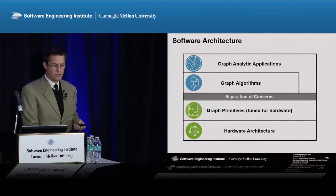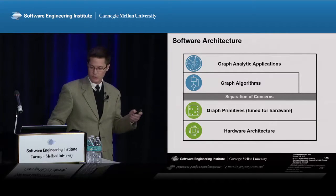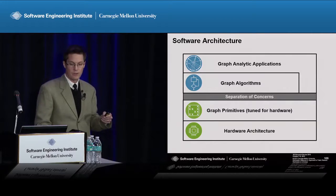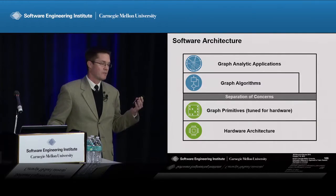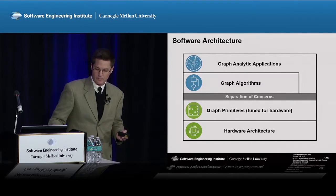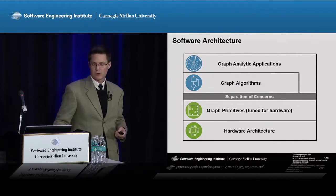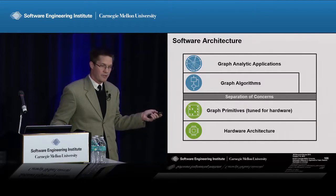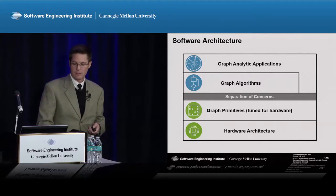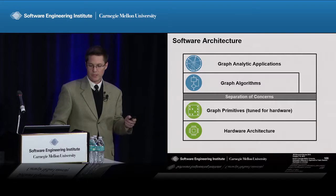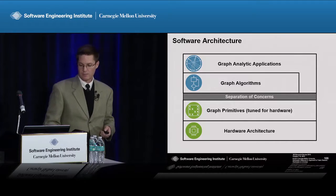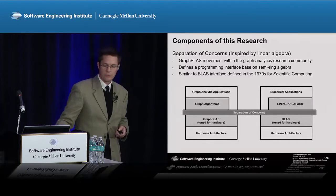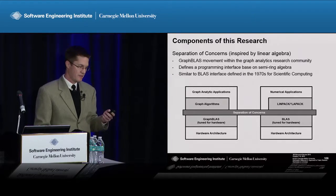This is the software architecture: graph analytics expertise sits above the separation of concerns, and hardware expertise sits below it. We want developers of graph analytic applications to not have to worry about hardware architectures. The separation of concerns shields them from hardware architecture changes. On top of the API, algorithms are developed in terms of that API; below it, hardware experts develop and tune the primitives for specific hardware architectures.